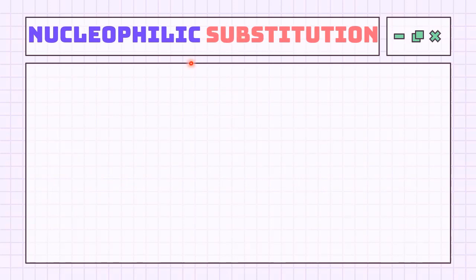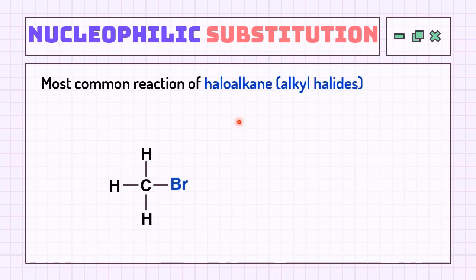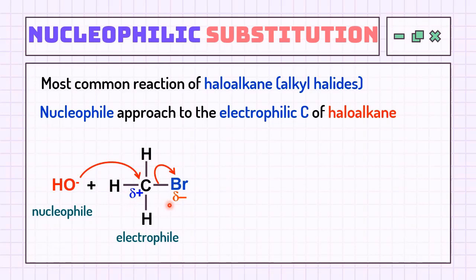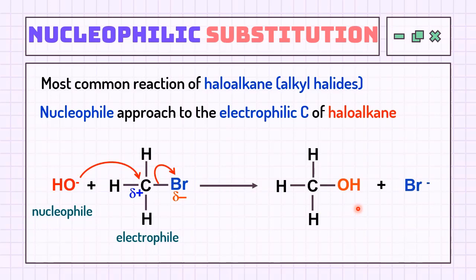Nucleophilic substitution means a nucleophile is substituted by replacing an atom on the electrophile. These reactions usually take place in haloalkanes, because the halogen from group 17 is a very good leaving group. First, identify the electrophilic site on the haloalkane by denoting the partial positive and partial negative charges. Then, the nucleophile approaches the electrophilic carbon from the back, the carbon-bromine bond breaks, and the product is formed with the nucleophile attached.